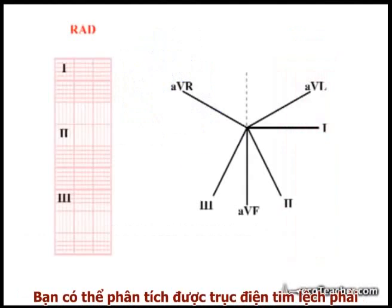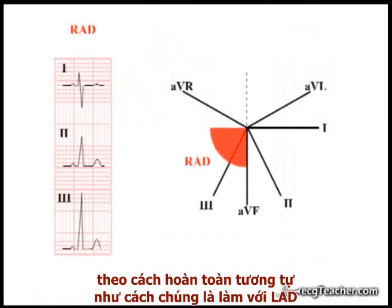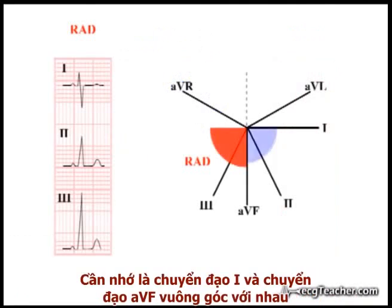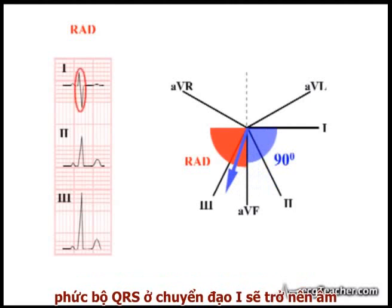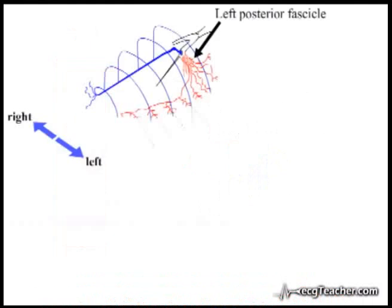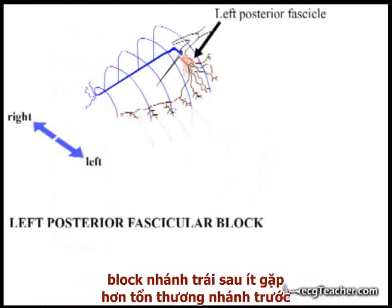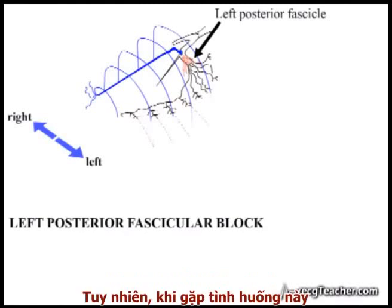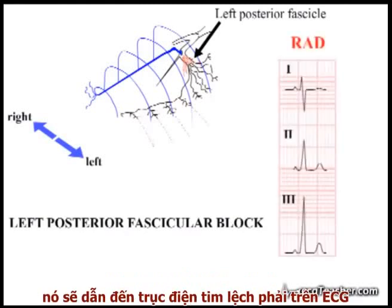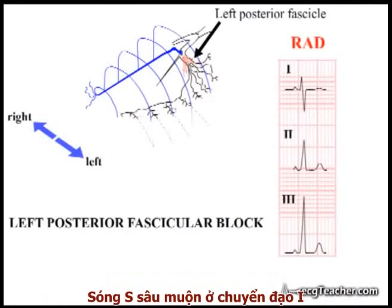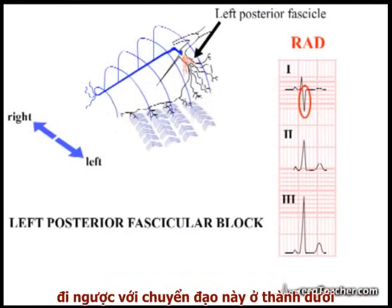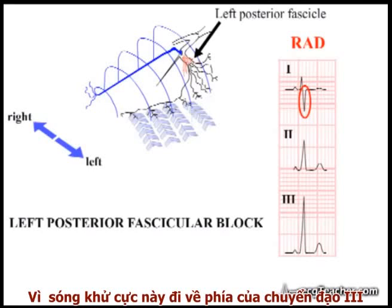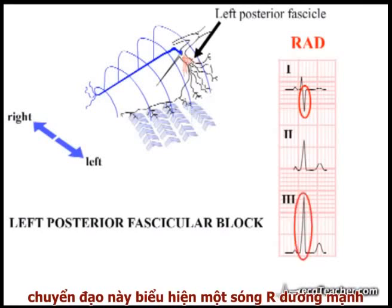You can work out the ECG appearance of right axis deviation in exactly the same way as we did for LAD. Remember, lead 1 and lead AVF are separated by 90 degrees. When the axis moves beyond AVF into right axis deviation territory, the QRS complex in lead 1 becomes overall negative while that in lead 3 remains positive. Left posterior fascicular block is less common than damage to the anterior fascicle. However, when this situation does arise, it results in right axis deviation on the ECG. The late deep S wave in lead 1 reflects the delayed retrograde spread of depolarization away from this lead in the inferior wall. As this depolarizing voltage is moving towards lead 3, this lead retains a strong R wave.